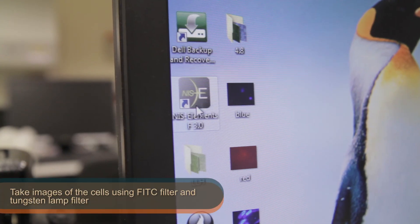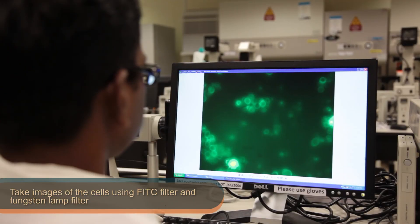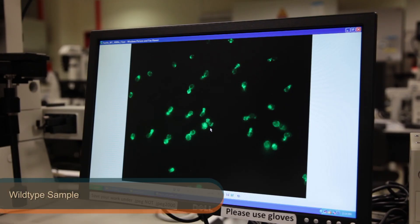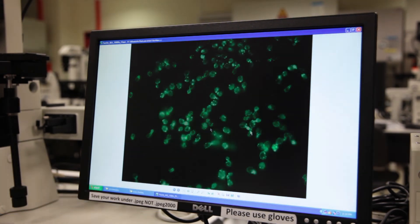Take images of the cells using the FITC filter and with the tungsten lamp filter. These are the images you should be able to see.